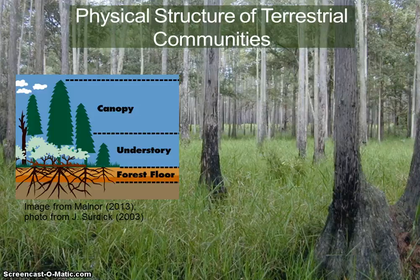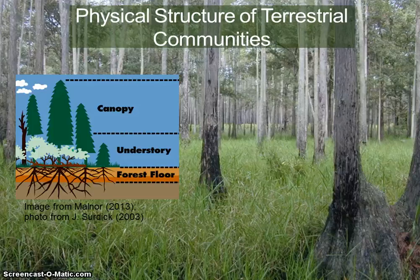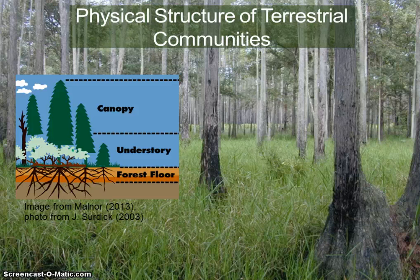The upper layer or canopy is the primary site of energy fixation through photosynthesis. The understory is situated under the canopy and will only form if enough sunlight can reach these lower layers. The nature of the herb layer depends on various abiotic conditions, for example, soil moisture and the density of the canopy and understory. The forest floor is where decomposition takes place and nutrients and minerals are recycled.